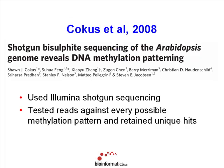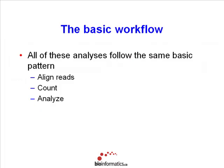Another more exhaustive method tested reads against every possible methylation pattern and then retained unique hits. The basic workflow here is: align reads — more difficult for methylated reads — but essentially the same process of aligning reads, counting, and analyzing. If you can do read alignment, you can basically apply any of the methods just talked about.